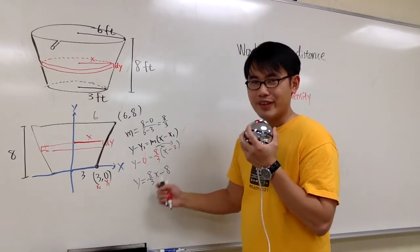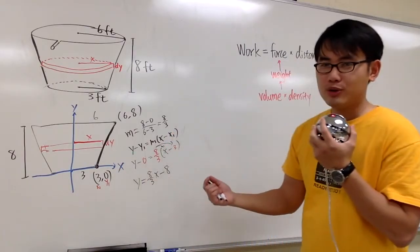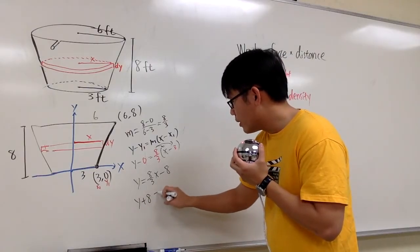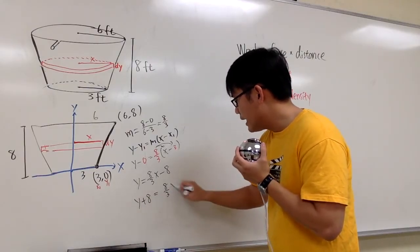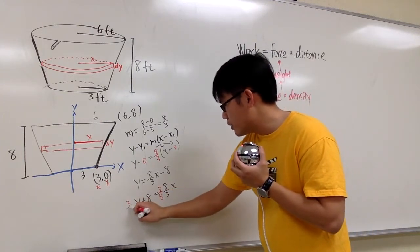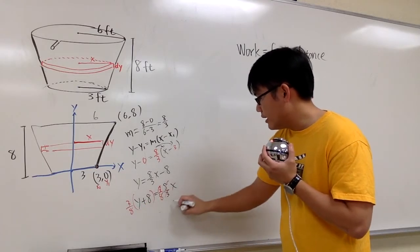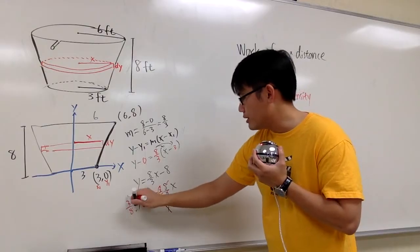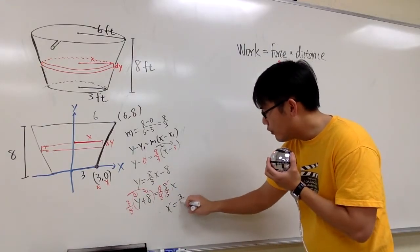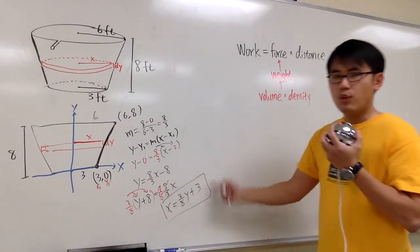But I don't want this equation of a line. I want the x. I want to isolate x, so we have to do more algebra here. We add 8 on both sides: y plus 8 will be 8 over 3x. Then we multiply both sides by 3 over 8. So it will all cancel out, and x will be, I can distribute this number into the parentheses, I will get 3 over 8y plus 3. And this is pretty much x in terms of y. That's the hardest part.